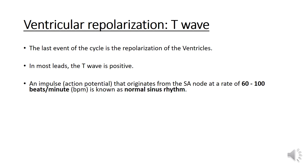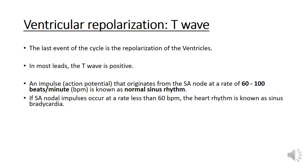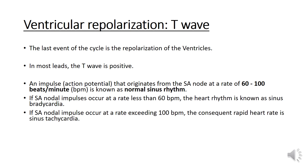An action potential that originates from the SA node at a rate of 60 to 100 beats per minute is known as normal sinus rhythm. If SA nodal impulses occur at a rate below 60 beats per minute, the heart rhythm is known as sinus bradycardia. If SA nodal impulses occur at a rate exceeding 100 beats per minute, the consequent rapid heart rate is sinus tachycardia. These conditions are not necessarily bad symptoms.